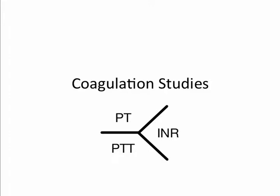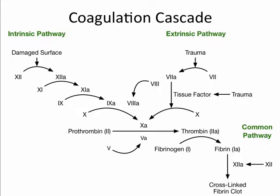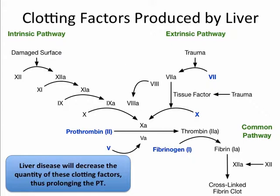Let's now discuss coagulation studies. The first is the prothrombin time, or PT, used to evaluate the extrinsic system and the common pathway in the clotting mechanism. It measures factors 1, 2, 5, 7, and 10. When these clotting factors are deficient, the PT will be prolonged. The intrinsic pathway is activated by damage to the endothelium of blood vessels; the extrinsic pathway is activated by tissue trauma. These two pathways merge at activated factor X, forming the common pathway, and a fibrin clot is formed. Factors 1, 2, 5, 7, and 10 are produced by the liver, so liver disease will decrease the quantity of these factors, prolonging the prothrombin time. Factors 2, 4, 5, and 7 are dependent on vitamin K, so reduced bile — responsible for fat metabolism — will decrease these factors. Coumadin additionally targets vitamin K-dependent factors, and both of these cases will increase the PT.